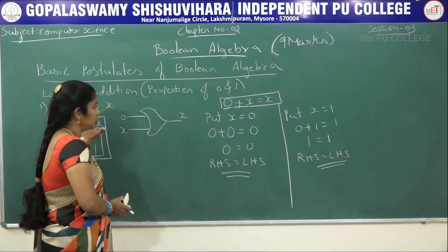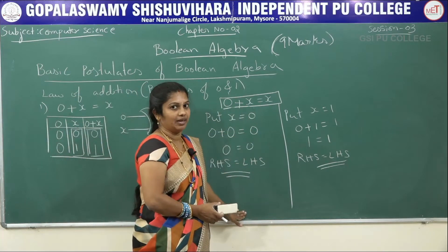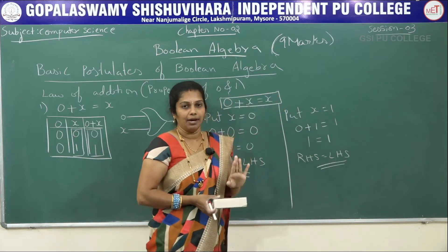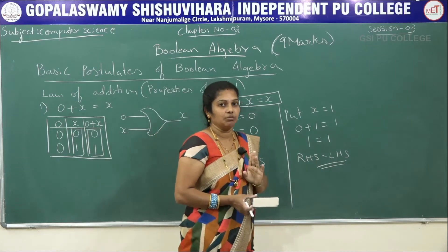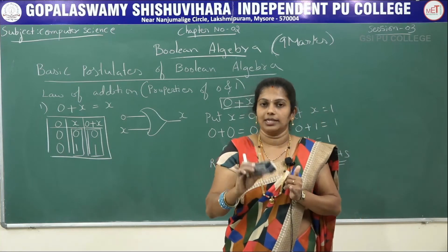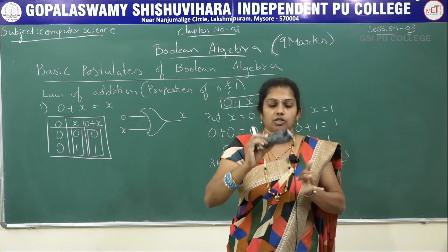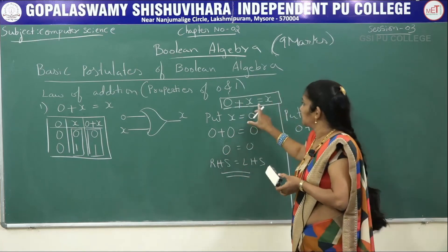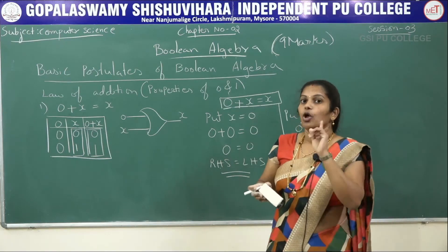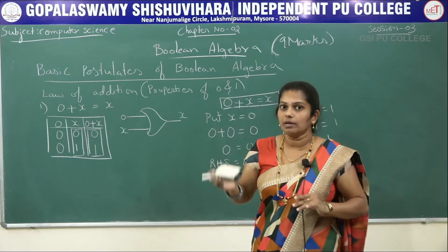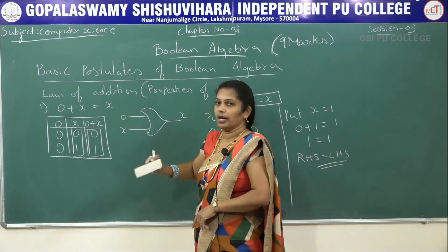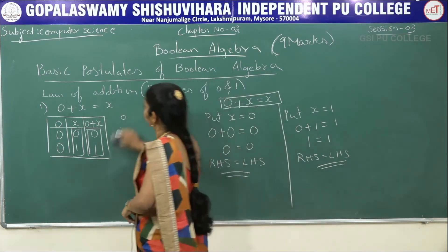In summary, to prove a postulate you write the symbol, the truth table, and then prove it by perfect induction method. Perfect induction method means substituting 0 and 1 for the given variable and solving. If the exam asks to solve by truth table only, write only the truth table. If they ask for the algebraic method, use all the postulates to solve. This completes the first law of addition: 0 + x = x.